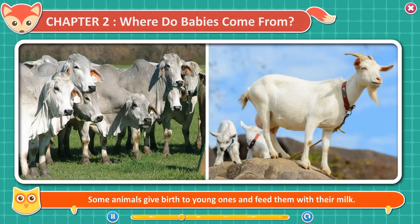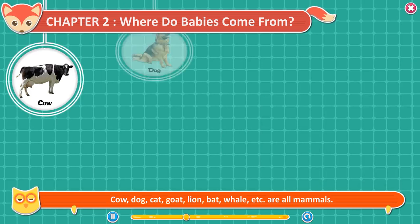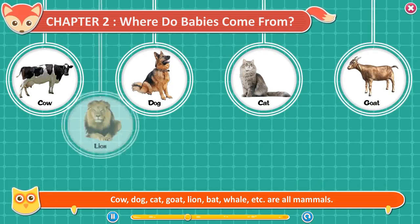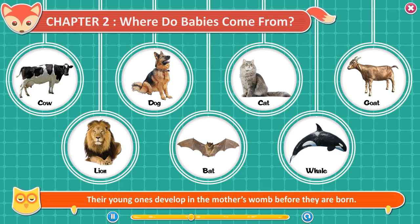Some animals give birth to young ones and feed them with their milk. They are called mammals. Cow, dog, cat, goat, lion, bat, whale, etc. are all mammals. Their young ones develop in the mother's womb before they are born.